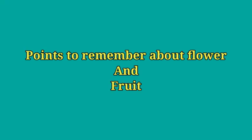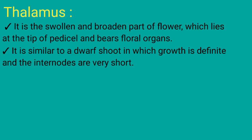Hi everyone. In this video I am going to explain about points to remember about flower and fruit. Thalamus is the swollen and broadened part of a flower which lies at the tip of the pedicel and bears floral organs. It is similar to a dwarf shoot in which growth is definite and the internodes are very short.